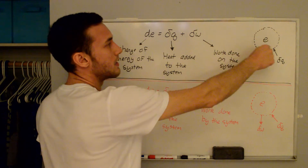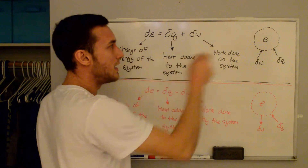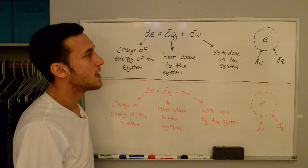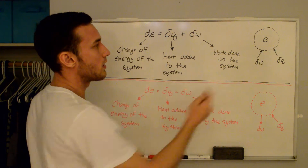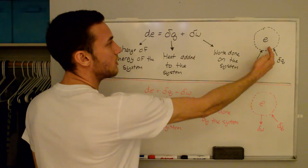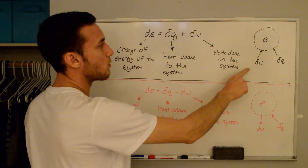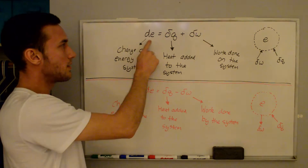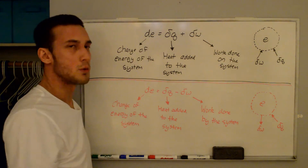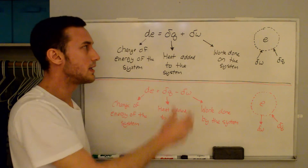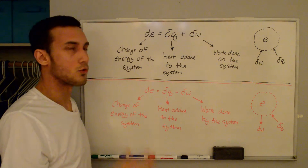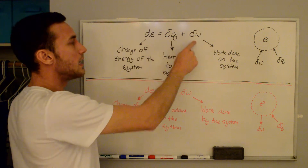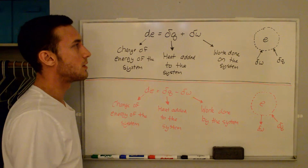Our system is outlined by the dashed boundary and has a certain energy E. Based on this definition, we are adding heat to the system and doing work on the system. You would assume that the energy of the system increases if you add heat to it, and that it increases when the surroundings do work on the system — which is why this equation makes sense.